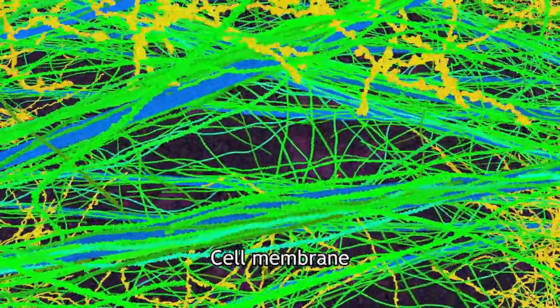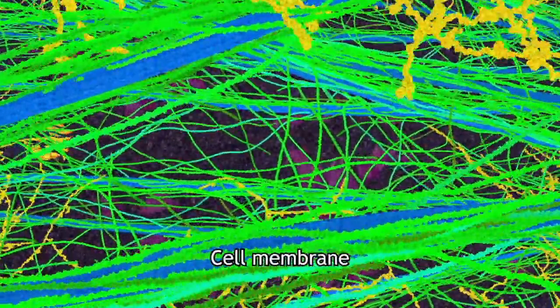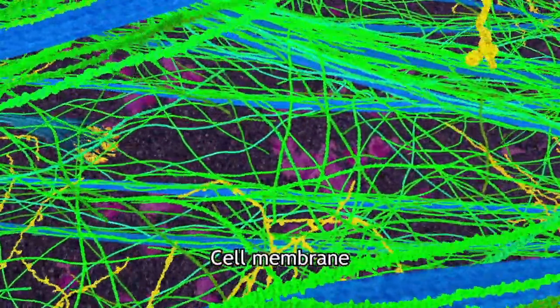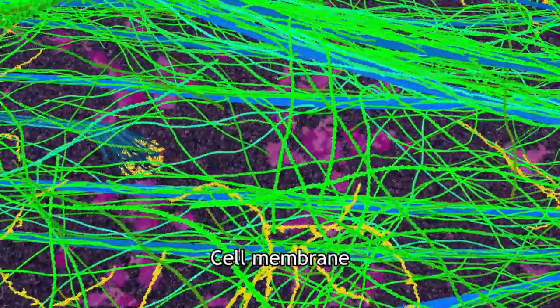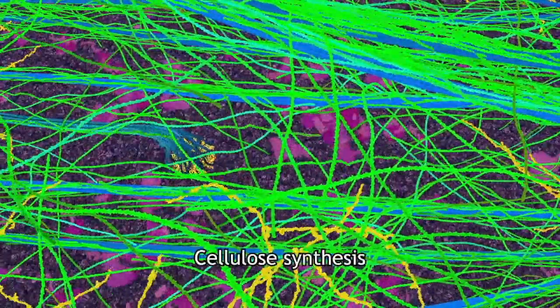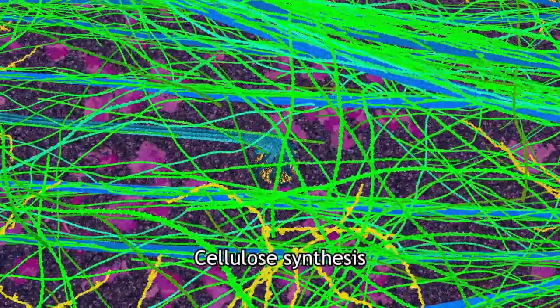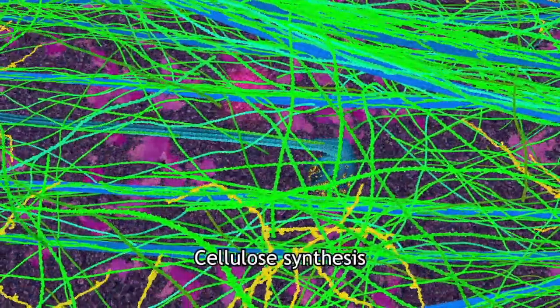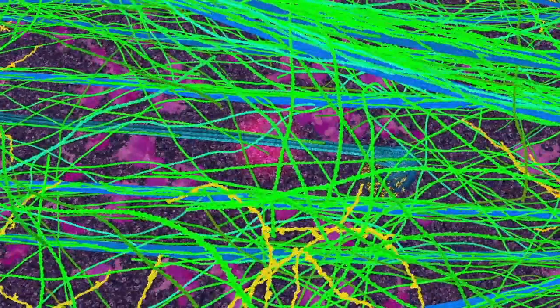The primary wall is created at the cell's outer membrane. A rosette of cellulose synthesis enzymes moves across the membrane surface, generating long chains of cellulose molecules, which combine into stiff microfibrils.